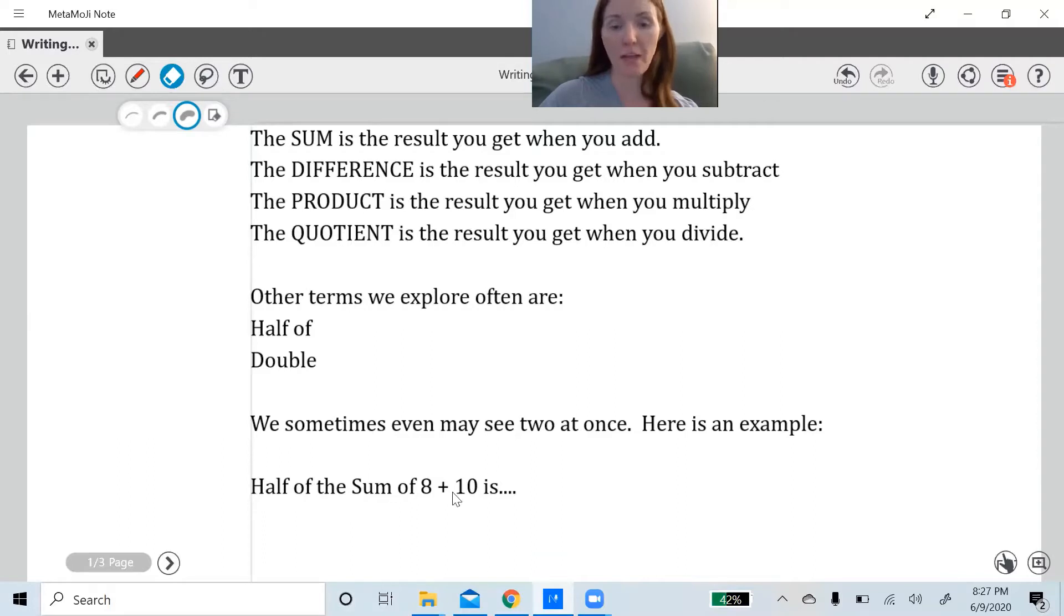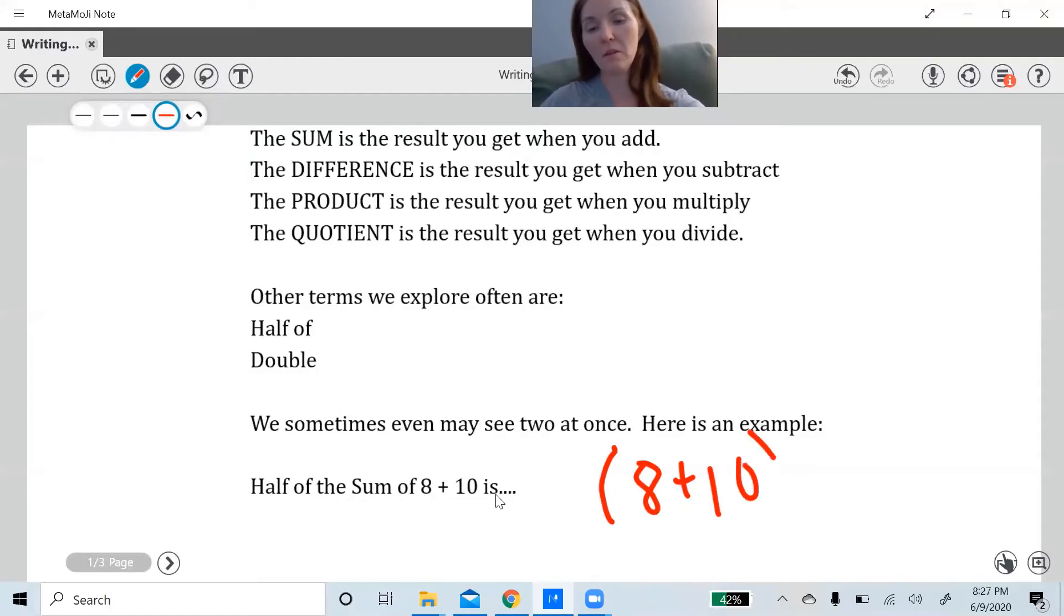Half of the sum of 8 plus 10 is, okay, so half of the sum of 8 plus 10. So the sum of 8 plus 10 is going to be addition, right? Sum is the result you get when you add. So the first thing I'm going to do is I'm going to think about what that looks like. So if I take 8 plus 10, right, that's going to get me started, and that kind of covers this part of the equation right here, sum of 8 plus 10.